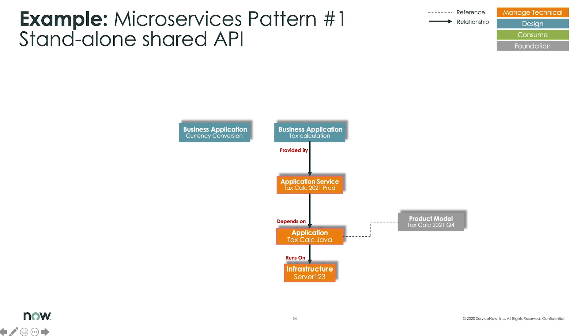Here we have the application service, which represents the production environment. In this case, it's the 2021 prod environment. And we also deal with the application table here.